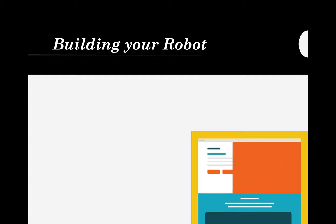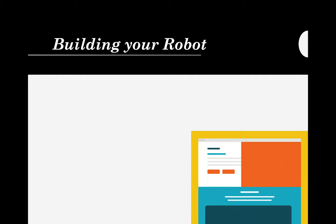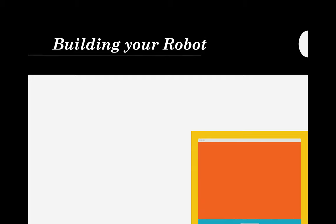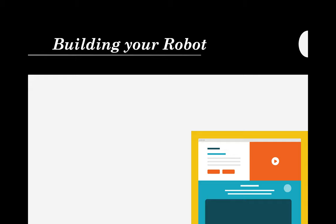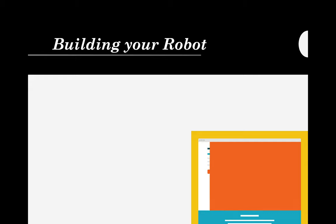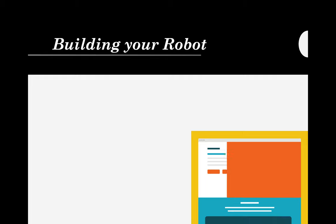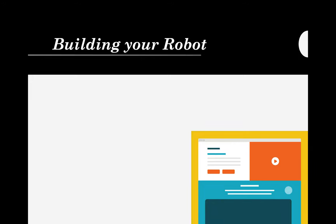After building or creating your prototype, this time we are now building our robot. Just like what I shared earlier, in building your robot there are a lot of methods — cutting, casting and molding, and many other ways. But again, it depends on your solution.